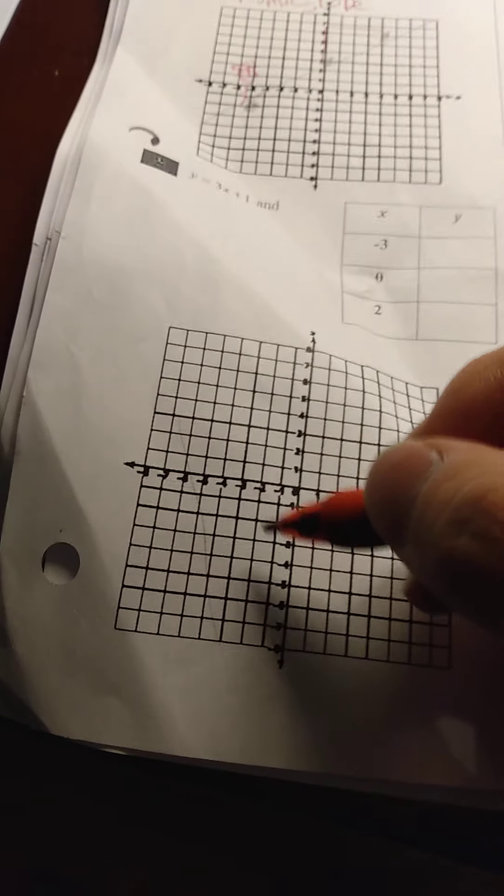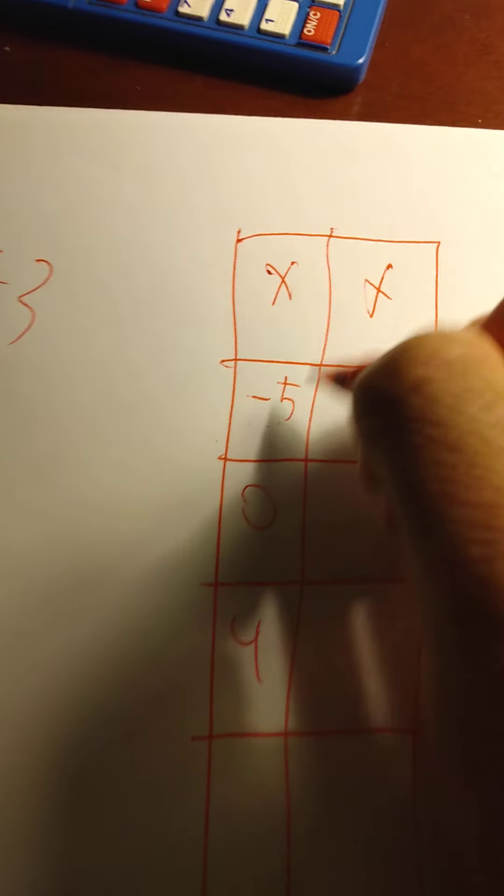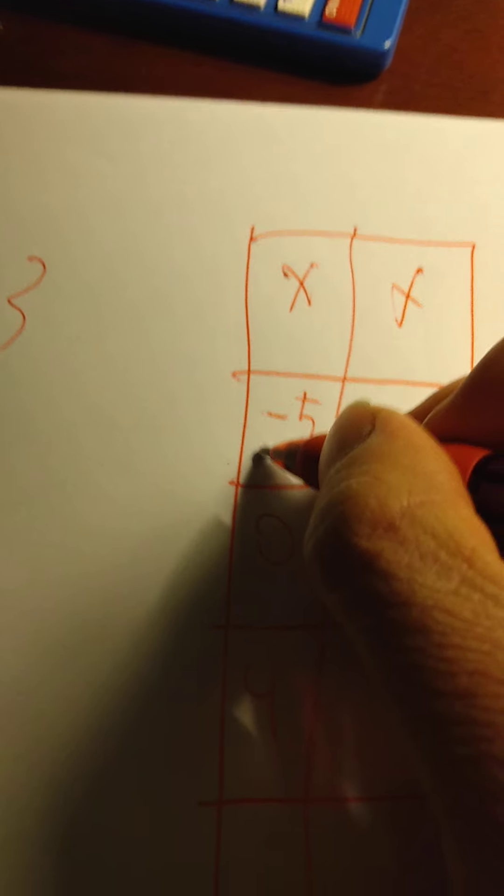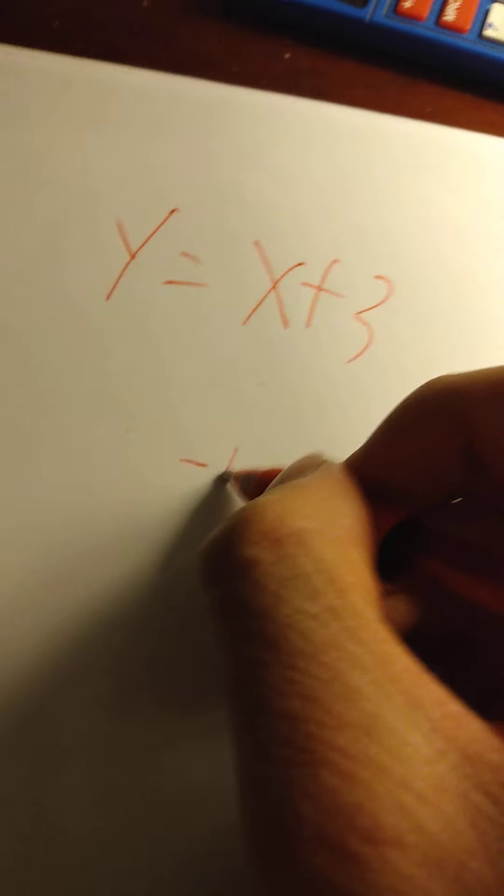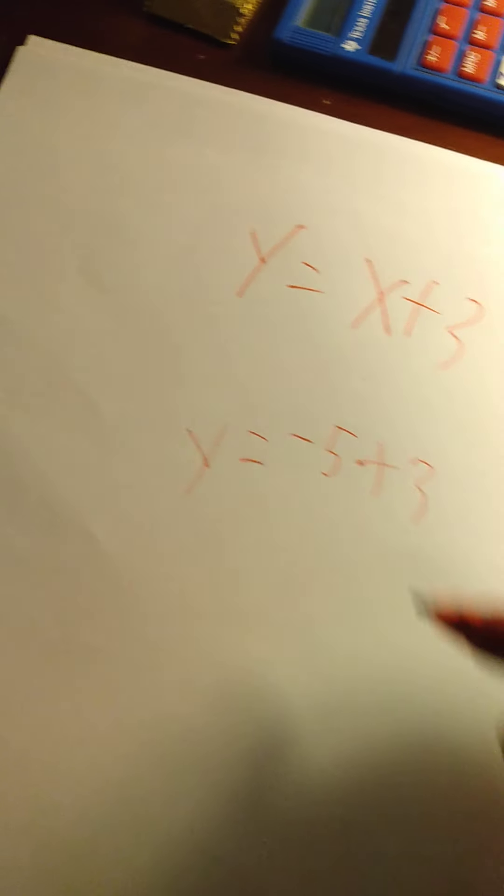Do you think the slope is going to be steep, pretty low, or in the middle? Let's try and find out. So here's x. The problem is saying x must be negative 5. So if we insert negative 5 here, plus 3, what would y equal?